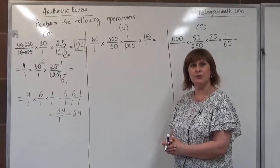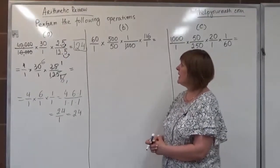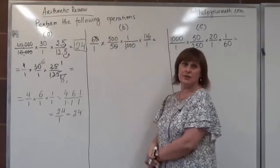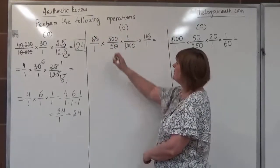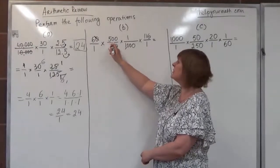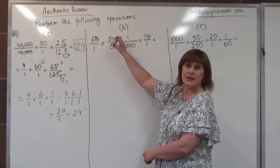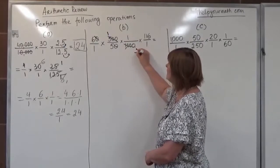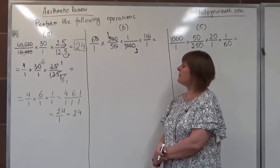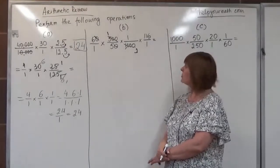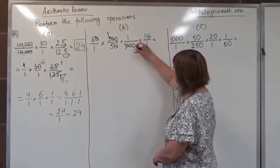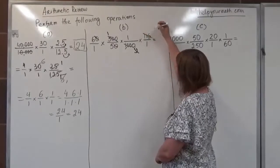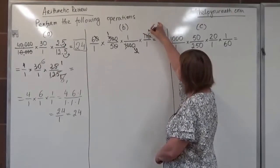First, let's start again by clearing zeros. We can try to clear one zero in the denominator against one zero in the numerator. We can also notice that in the numerator we have 500 and 1000 — 500 fits into 1000 twice, so we reduce that part to 1 and 2. We can also reduce 2 and 116, which gives us 58.